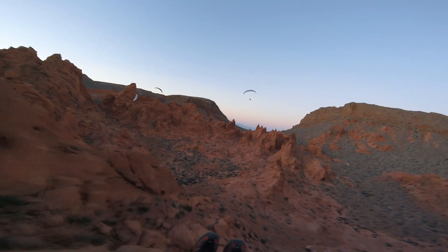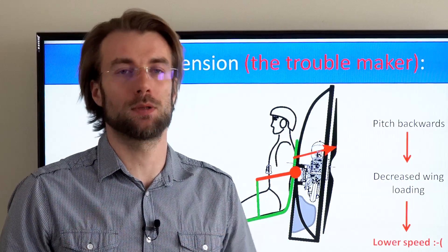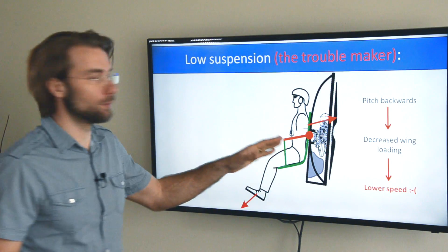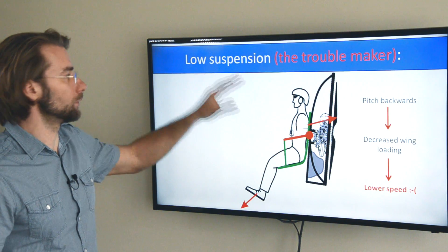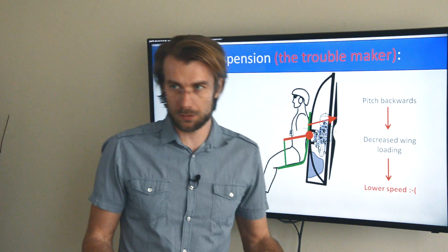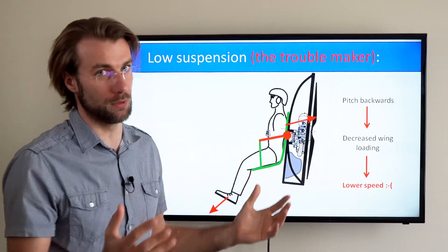Apart from the lower speed there are also some safety considerations but we will cover that in one of the next videos. Now I need to stress one fact. This is only valid for a low suspension system with a moving bar. If the bar is fixed nothing happens because the whole harness is rigid and it will not move.